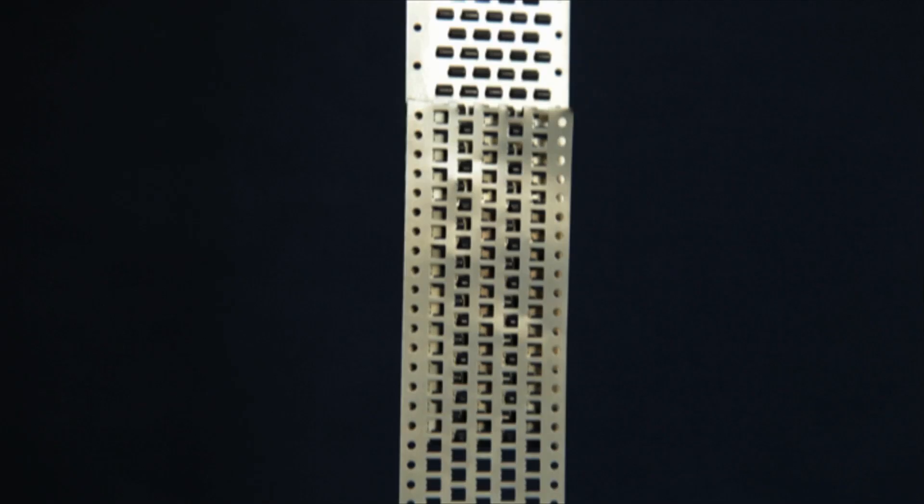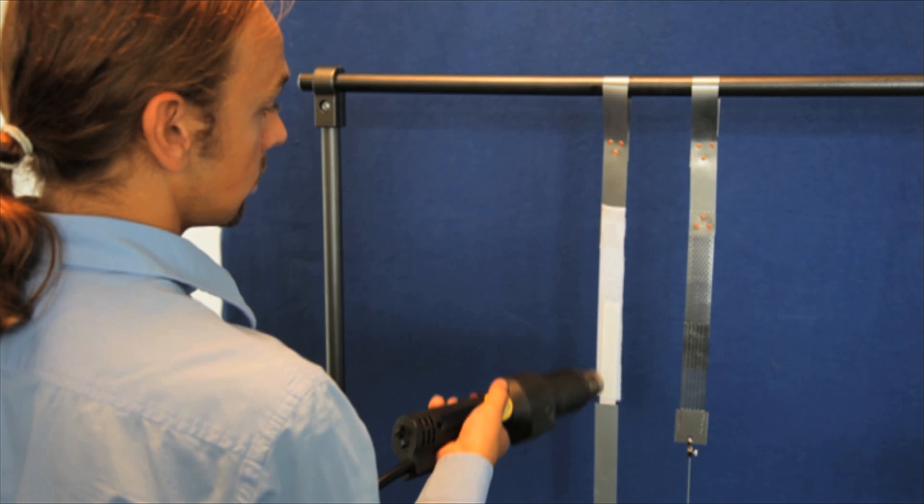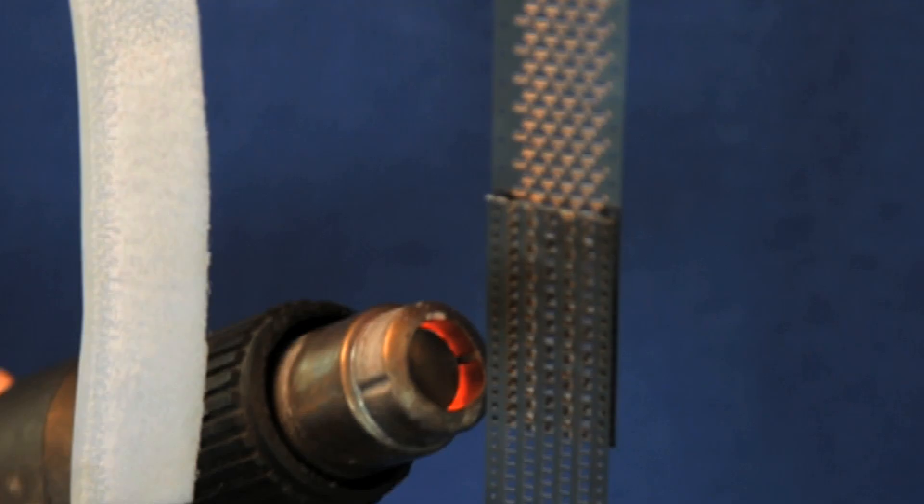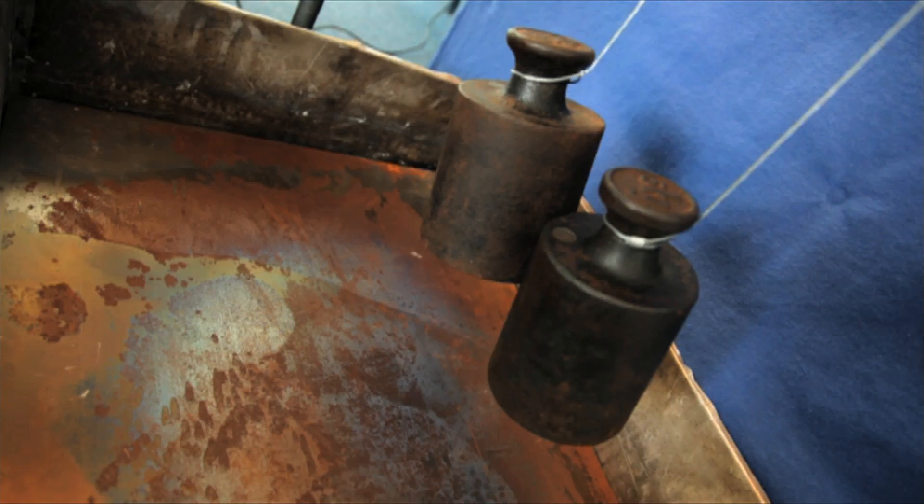A hot air gun heats both connections. The weights are still hanging. Temperature rises. Both connections are still holding, the conventional hook and loop fastener and the metallic one. But then it happens.